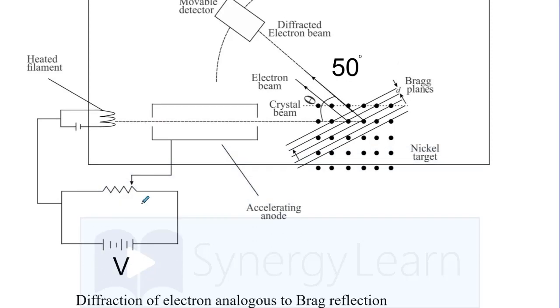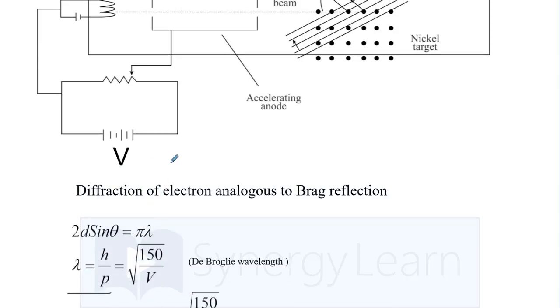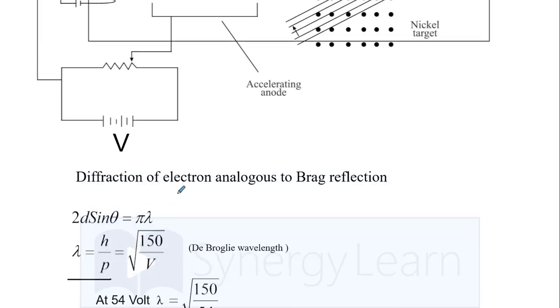Electrons when accelerated to certain voltage gain speed. They will have momentum and that can be written as under root of 150 by V, where V is accelerating voltage which we are using here.